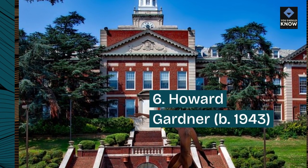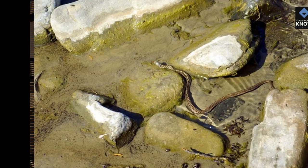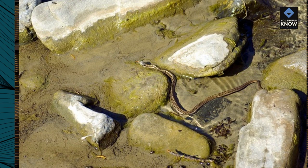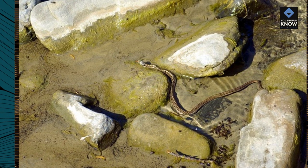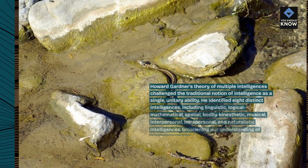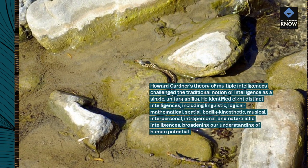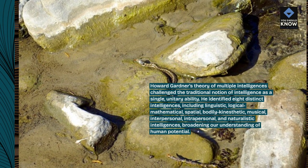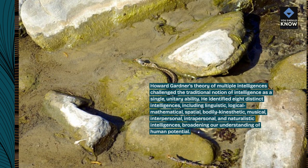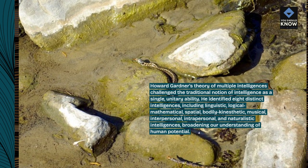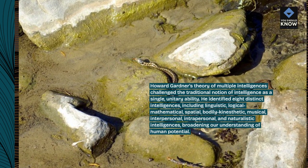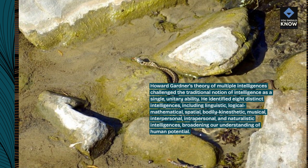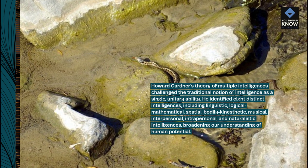6. Howard Gardner, b. 1943. Howard Gardner's theory of multiple intelligences challenged the traditional notion of intelligence as a single, unitary ability. He identified eight distinct intelligences, including linguistic, logical-mathematical, spatial, bodily-kinesthetic, musical, interpersonal, intrapersonal, and naturalistic intelligences, broadening our understanding of human potential.